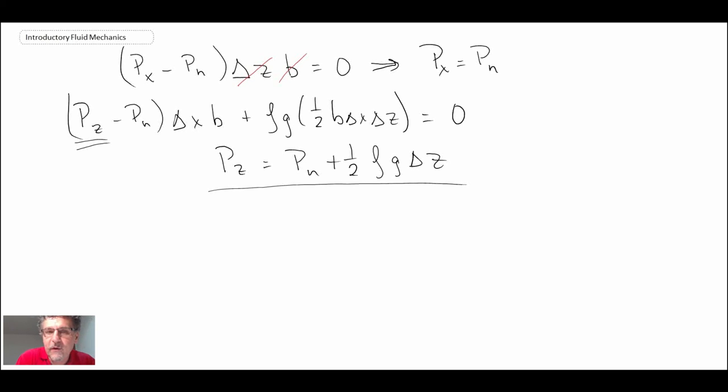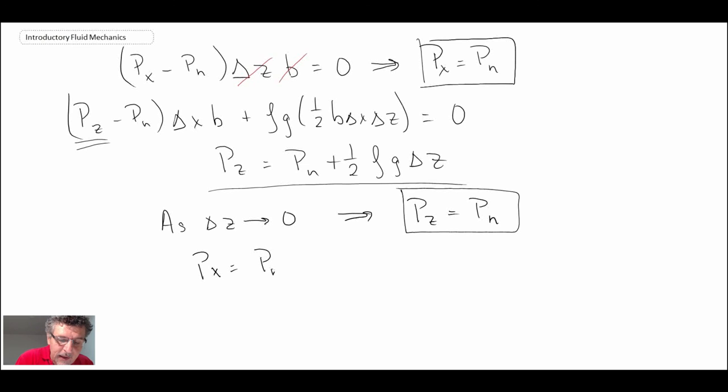Now, what I'm going to do, I'm going to assume that our fluid wedge becomes infinitesimally small. So I'm going to write as delta Z goes to zero. We can then write that PZ is equal to PN. So that is similar to what we had for PX is equal to PN. And consequently, what we can write is that PX is equal to PN is equal to PZ. And what does that tell us? It is that pressure at a point in a fluid is independent of direction in a stationary fluid.